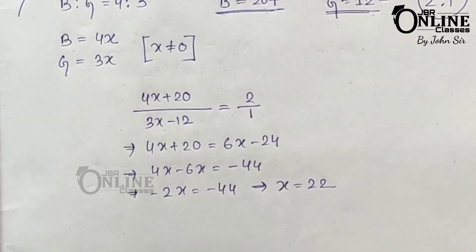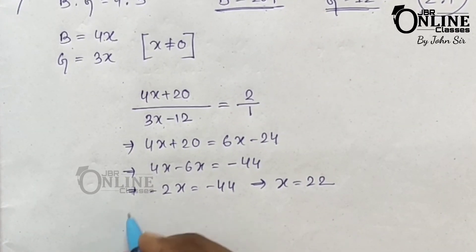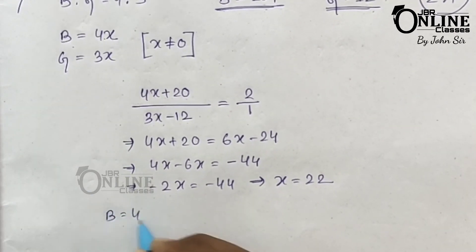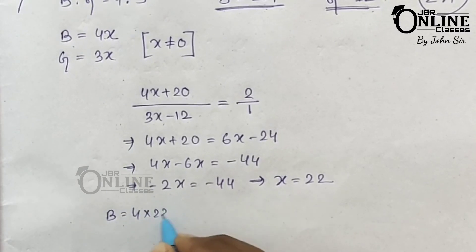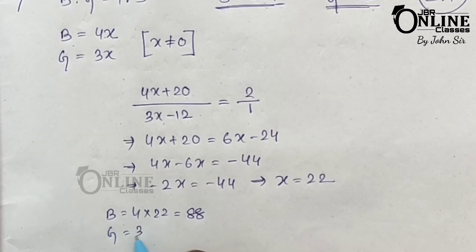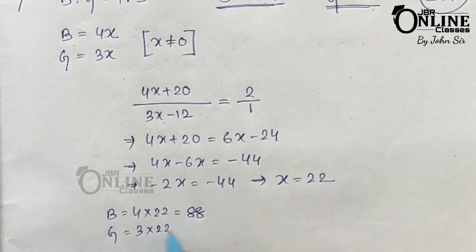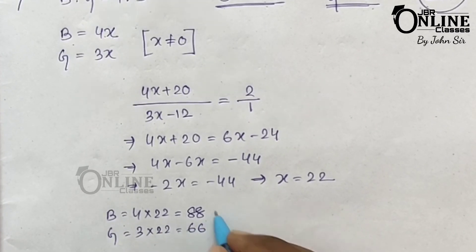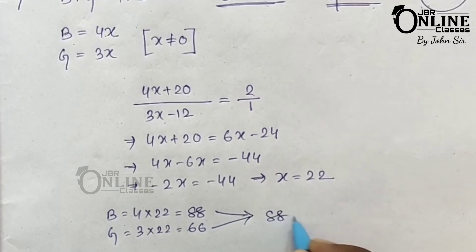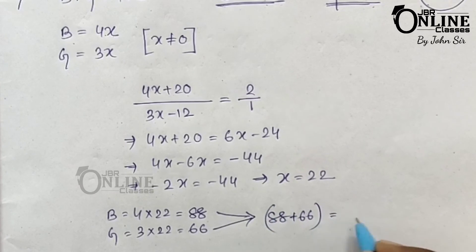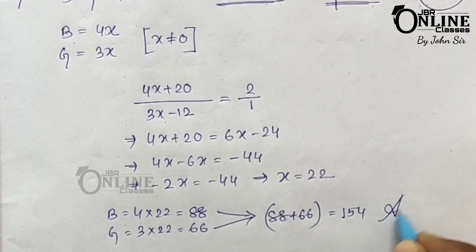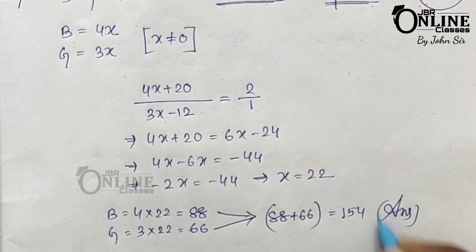The number of boys equals 4 into 22, which is 88. The number of girls equals 3 into 22, which is 66. So the total number of students equals 88 plus 66, which equals 154.